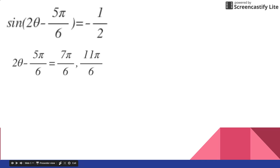The first thing I want to do is add 2π to get additional answers. So I'm going to add 2π to get the other two angles, which is 19π over 6 and 23π over 6.